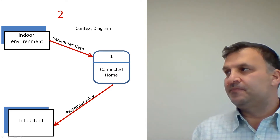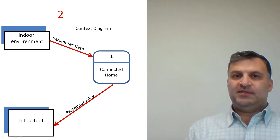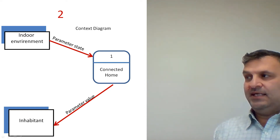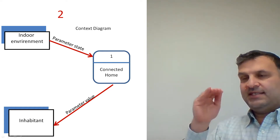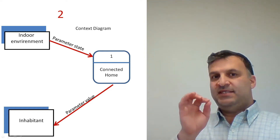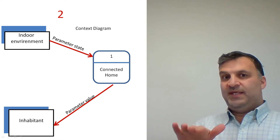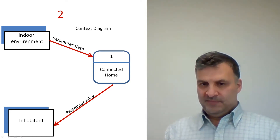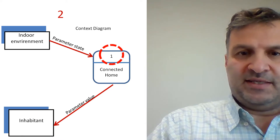Moving to the next slide — is there any problem here? Think a little bit. I think you discovered it: it is the number of the process. At the context level, the number of the process should be zero. If it is numbered one, two, or three, it belongs to level zero, not the context diagram. That is the problem here.